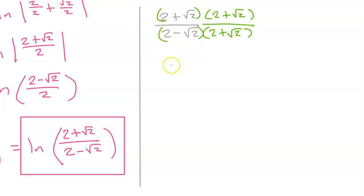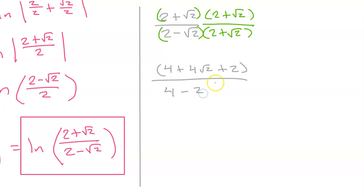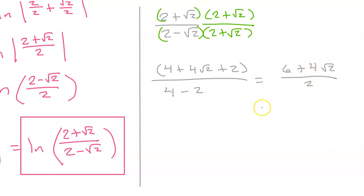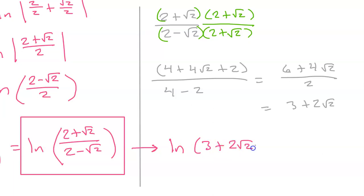In the numerator, I'm going to end up with 4 plus 4 radical 2 plus 2 — I'm just FOILing this out. In the denominator, I have A squared minus B squared, so this will be 4 minus 2. In the numerator I have 6 plus 4 radical 2, and in the denominator I just have 2. So if I divide both of these terms by 2, I get 3 plus 2 radical 2. So another version of the answer that you might see on a multiple choice question is natural log of 3 plus 2 radical 2.